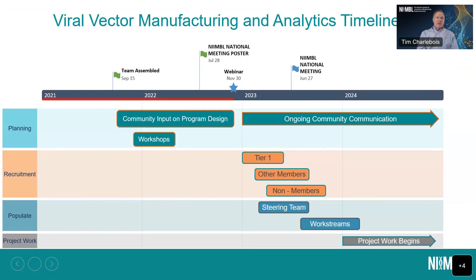Where are we going with the program from here? The webinar is today, and we've taken a lot of interesting and important input from the community both through the workshops and many other interactions. We extended that through the national meeting conversations back in July and got additional input. We've been working on our membership model leading into signup and recruitment early next year. We're going to go to our Tier 1 members first to ensure they're interested and helping to drive this program. They have full rights by virtue of their Tier 1 participation to participate in all Nimble-led programs. We'll then be going to other members and are looking to sign up others who want to participate in and join the viral vector program fully.